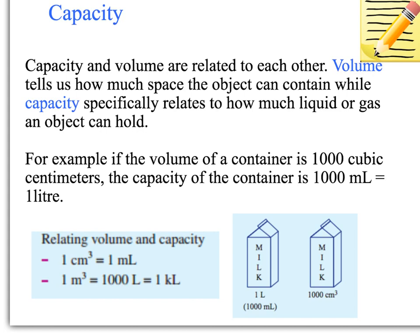You can see the picture of the milk container here. The volume of it is 1,000 cubic centimetres, and the capacity of it is 1,000 millilitres, which is 1 litre. It's just a different way of writing it because we need to show the capacity in liquid when we're measuring liquids.